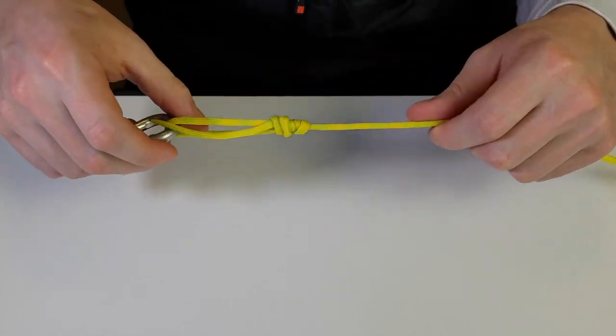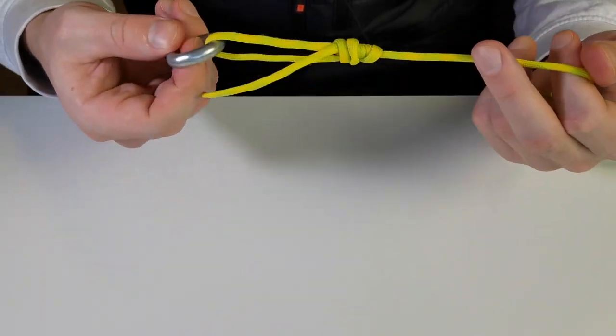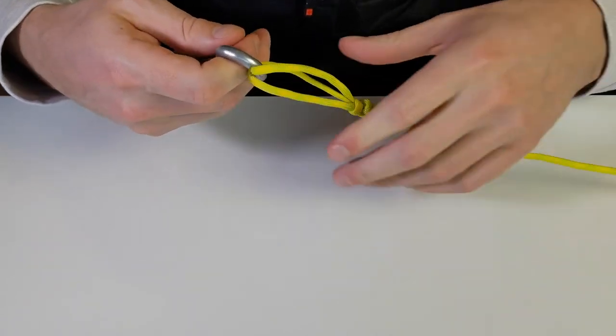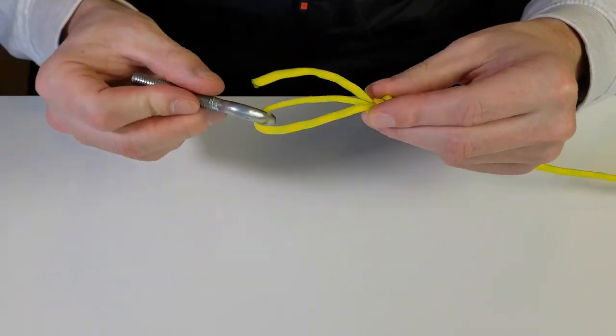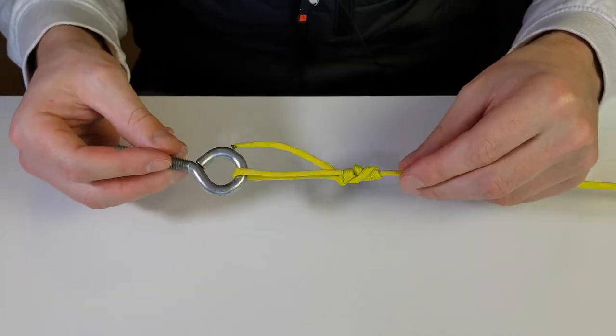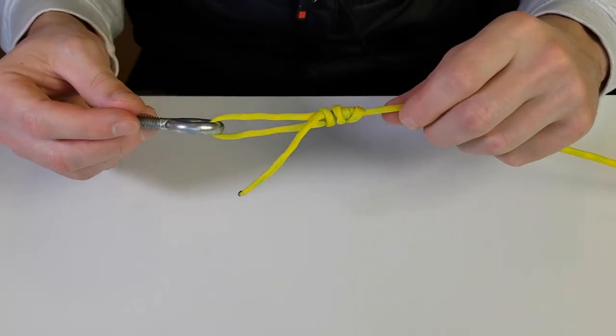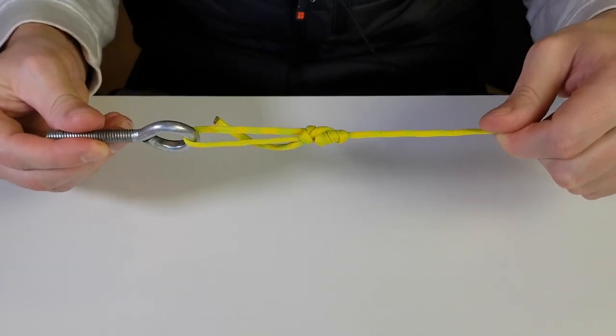Pull them tight and then once everything looks good you can hold on to your lure, hold on to your main line, and really pull them tight. Then you'll have the freedom of your lure to move around there and give it better action. All you got to do is clip off the tag end there and there is your simple non-slip loop knot.